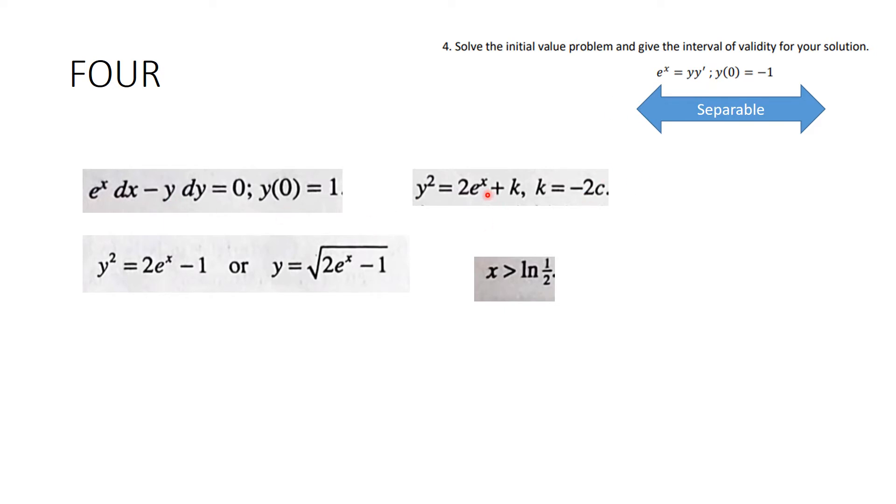I can figure out what k is from my initial condition. So I get that y squared is equal to 2e to the x minus 1, but I ask you to find the interval of validity. So you have to solve explicitly for y.